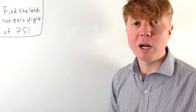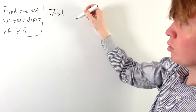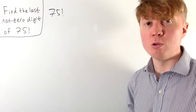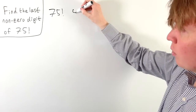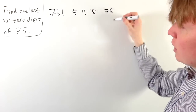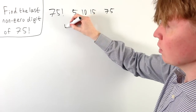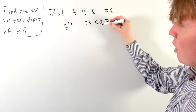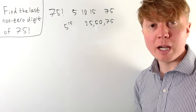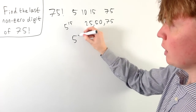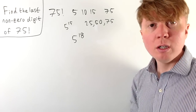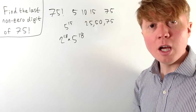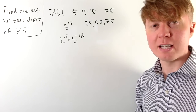This all relies on prime factorization. The number of zeros at the end of 75 factorial is determined by how many twos and fives are in its prime factorization. There are 15 multiples of 5 up to 75, giving at least 5^15. But 25, 50, and 75 each contribute an extra power of 5, adding 3 more. So we have 5^18. There are far more than 18 powers of 2, so we get 2^18 × 5^18, meaning 75 factorial ends in 18 zeros.